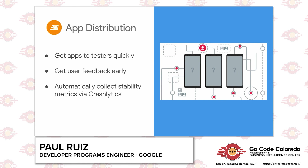App Distribution is great for rapid prototyping when you need to work with other people. You can upload your APK or IPA file and add either a single person or group in the console so that people can receive an email and download your app without having to go through the Play or Apple stores, and then give you feedback or work with your app before it's ever officially released to the public.